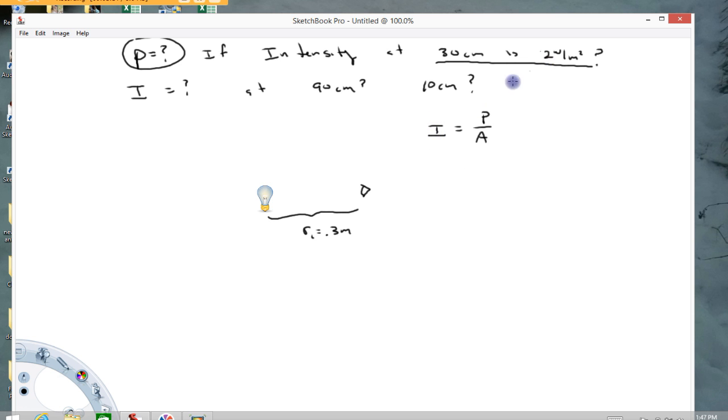The intensity is given in this problem as 2 watts per square meter. The power, we do not know. But the area is the area of this imaginary spherical surface around this bulb.